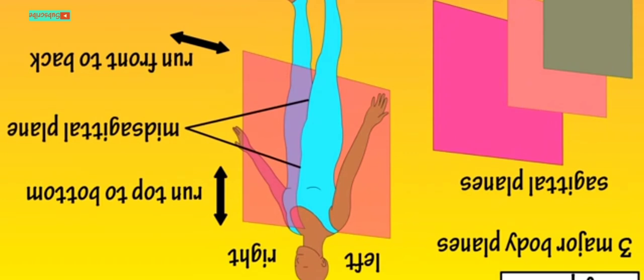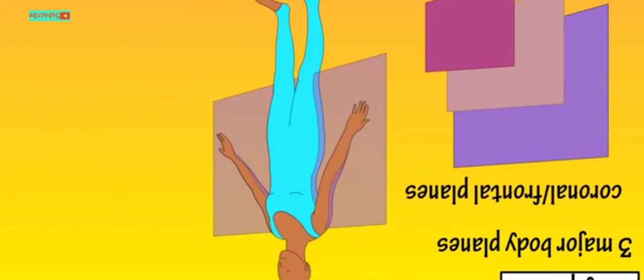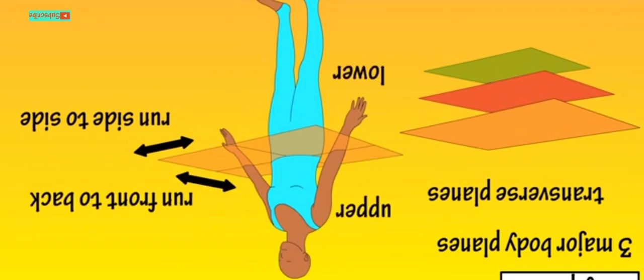Sagittal planes run from the top of the body to the bottom and from the front to the back, dividing the body into left and right sections. If a sagittal plane runs down the midline dividing the body into equal halves, it is called a mid-sagittal plane. Coronal or frontal planes divide the body into anterior and posterior sections. Transverse planes divide the body into upper and lower sections, and are sometimes called horizontal planes.